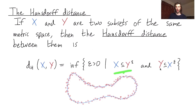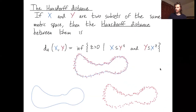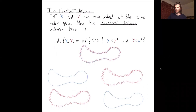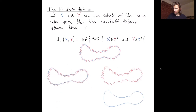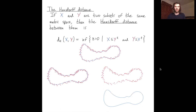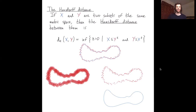Let me show you thickenings of y. Y is this set of red points, and x in blue is not contained in y — there are points on this loop not contained in this finite set of red points. But if I thicken these red points — make them a little bit larger, a little bit larger — x in blue is eventually contained in this thickening of y.